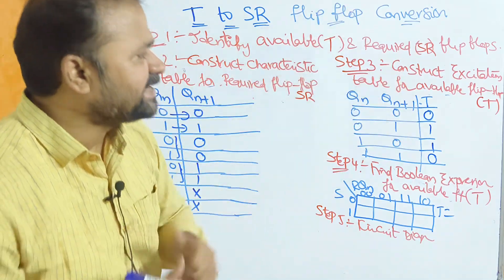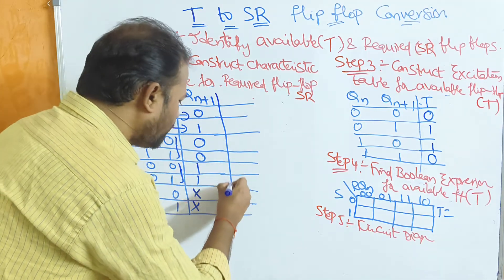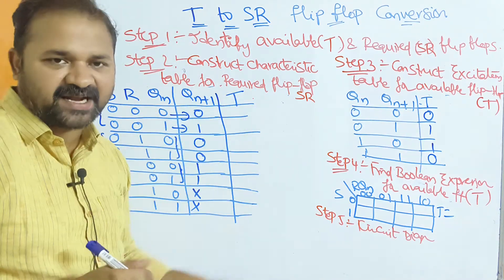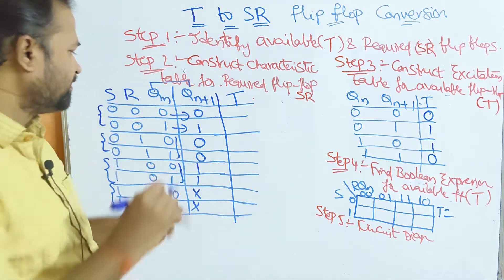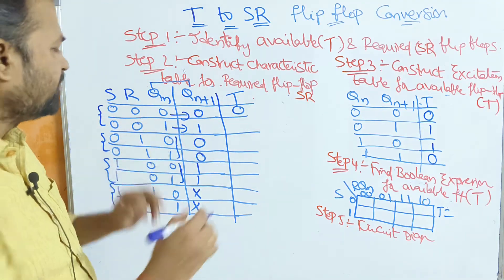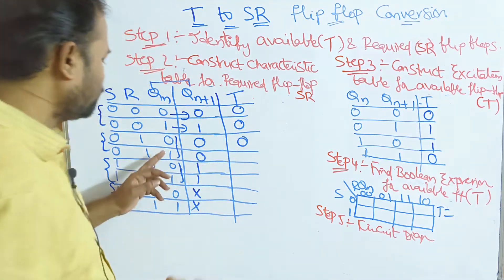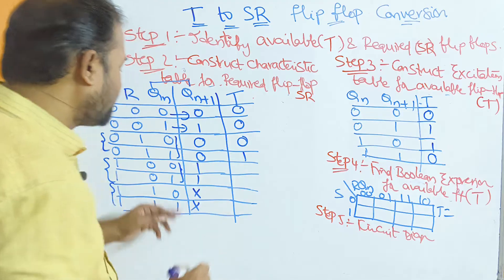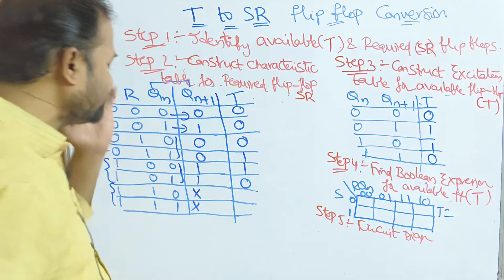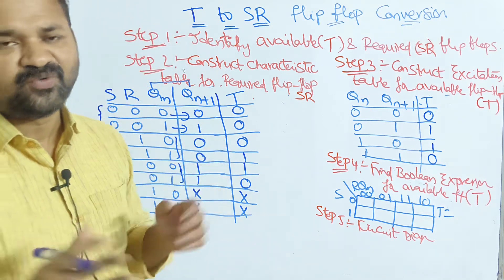Now, based on the excitation table, we fill the T column in the combined table. Qn=0, Qn+1=0 → same → T=0. Qn=0, Qn+1=0 → T=0. Qn=1, Qn+1=0 → different → T=1. Qn=0, Qn+1=1 → different → T=1. Qn=1, Qn+1=1 → same → T=0. Same means output is 0. For the don't care cases, the T output is also don't care since we don't know what the output is.